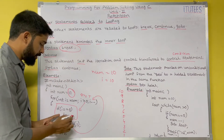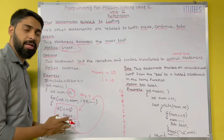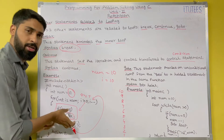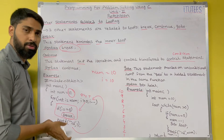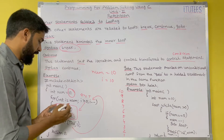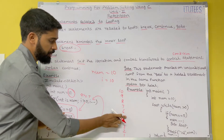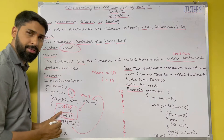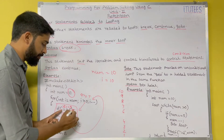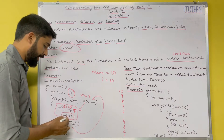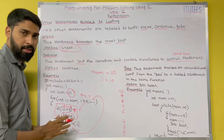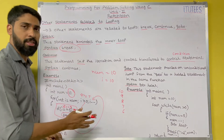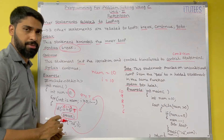Now observe the break statement. Break is an unconditional statement. When you execute break, the loop is terminated — you come out of the loop. When i value becomes 5, the condition if i equals 5 is true, so we enter that block and execute break. Break means exit the loop. So the output is 10, 9, 8, 7, 6.